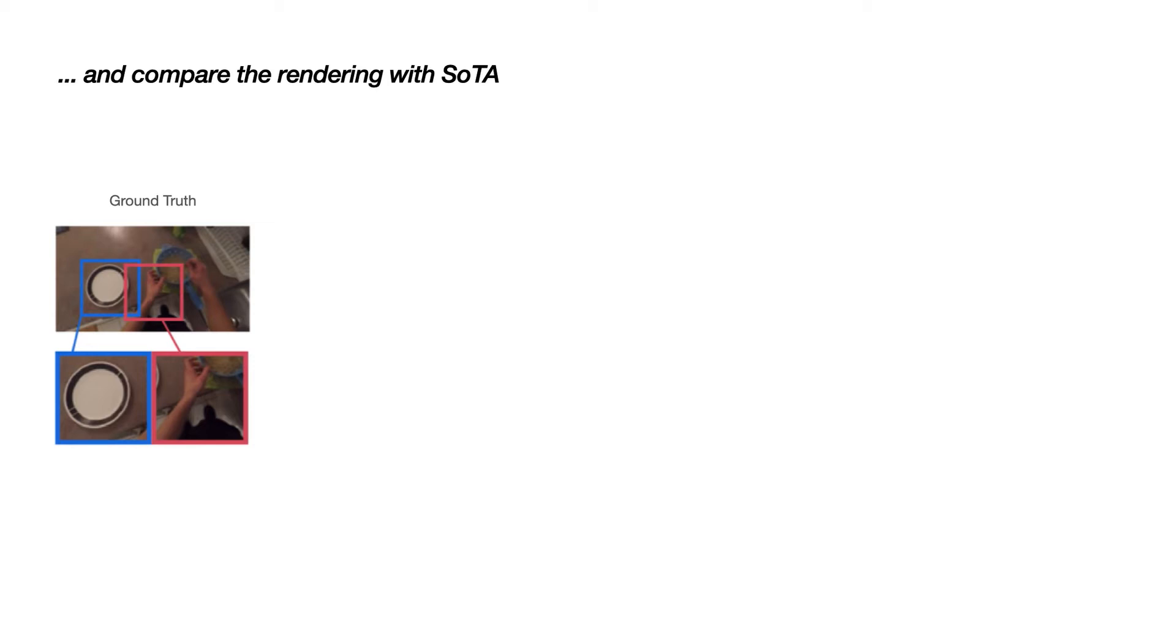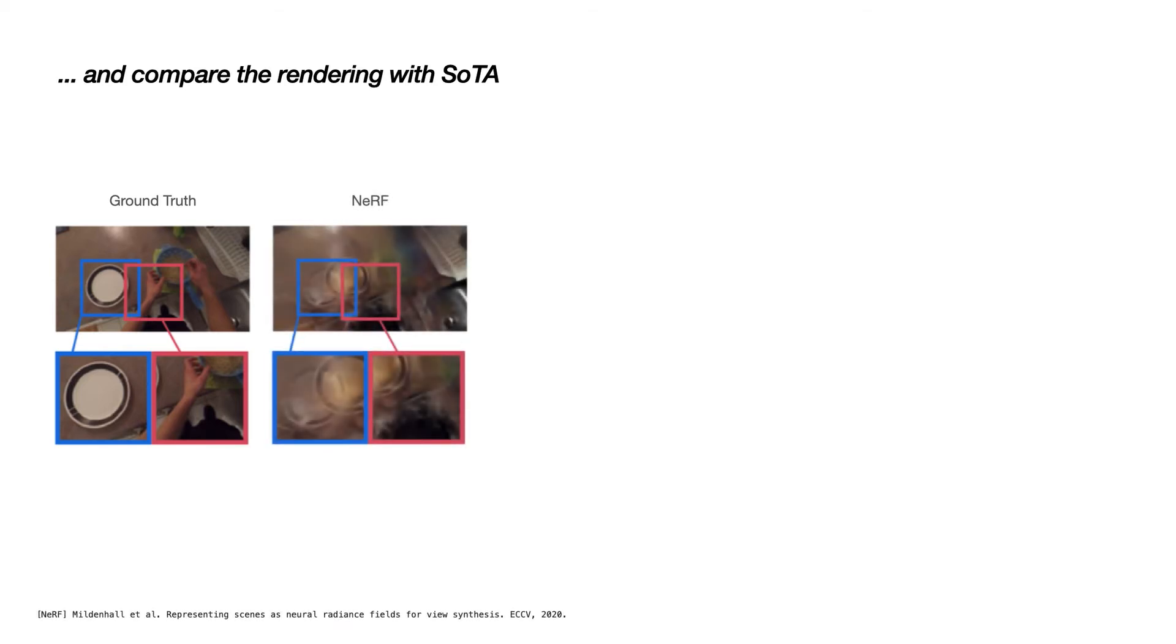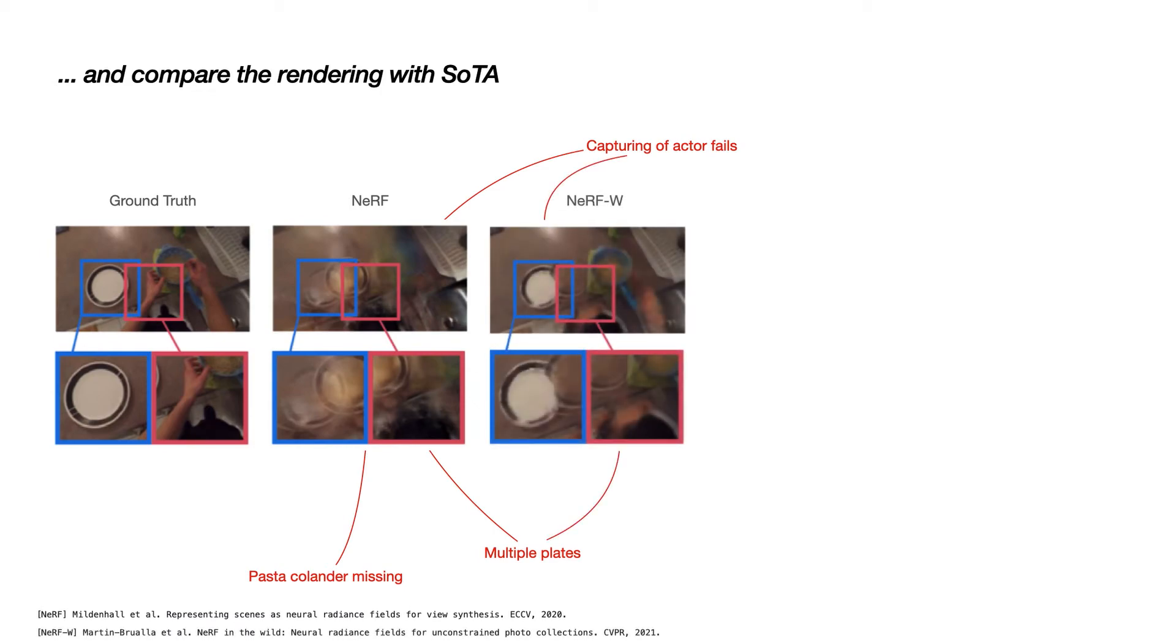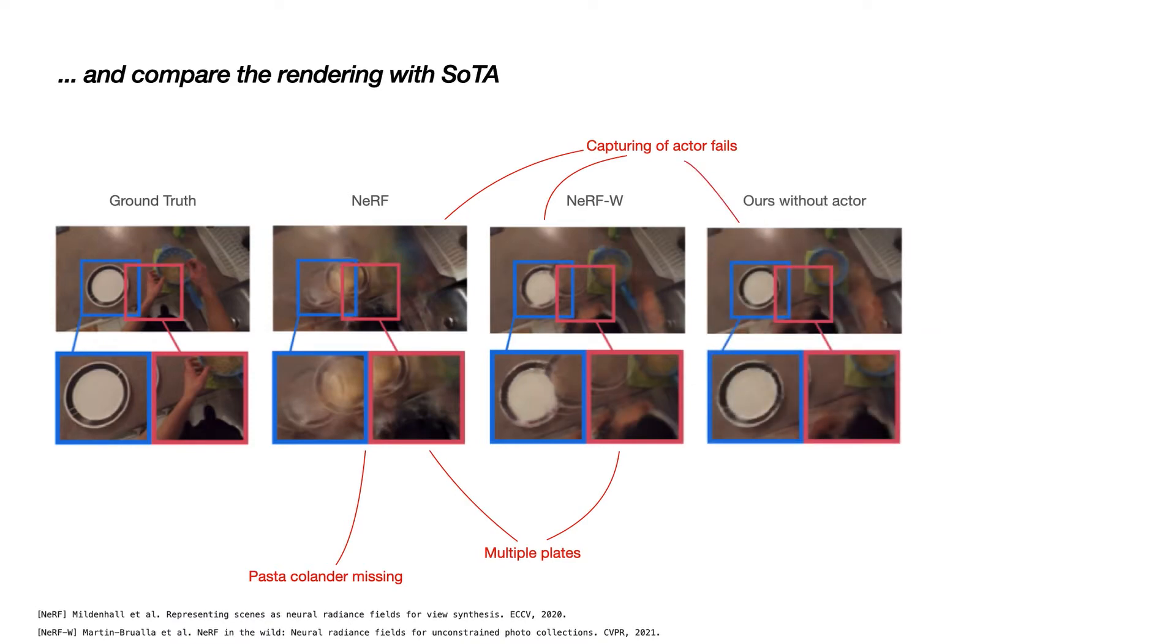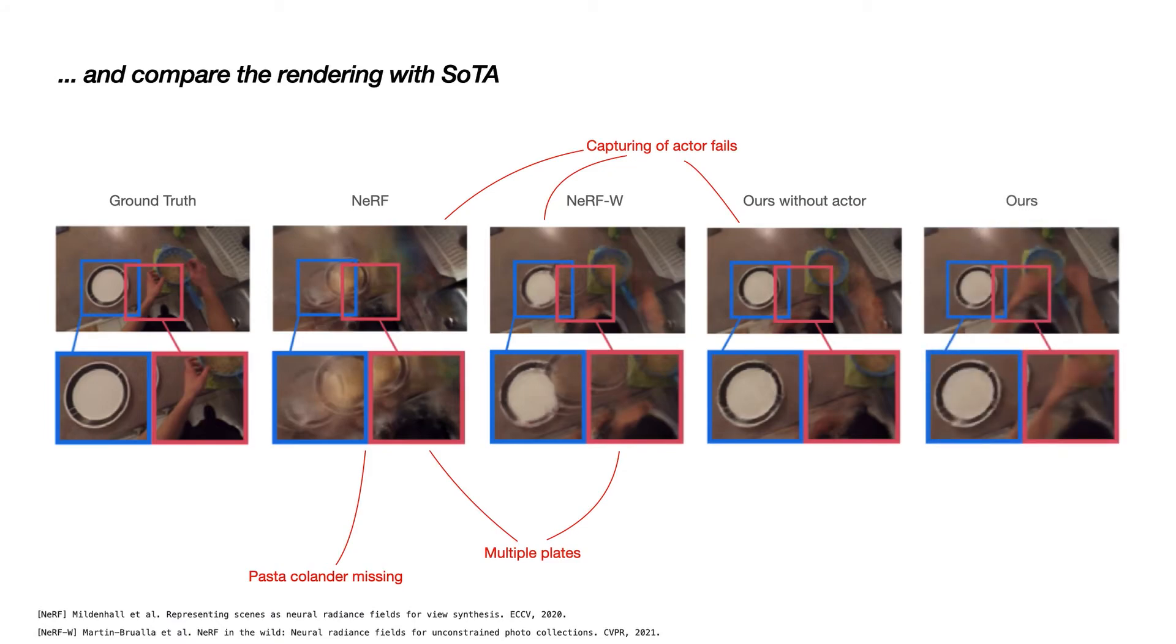We also compare our model with NeRF and NeRF-W in terms of the rendering to assess the quality of the visualization of both motion types. Here we see that NeRF is not able to capture the plate correctly and produces three overlaid plates instead. Additionally, the pasta colander and actor are barely visible. NeRF-W produces sharper results in general, but still shows multiple plates. If we apply our method without the actor model, we see that the actor is captured badly. With the actor model, we get slightly sharper results and capture also their hands more reliably.